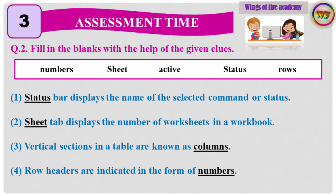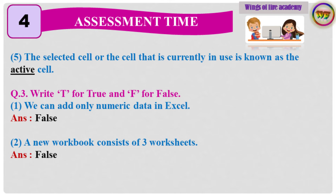Question 2: Fill in the blanks with the help of the given clues. 1. Status bar displays the name of the selected command or status. 2. Sheet tab displays the number of worksheets in a workbook. 3. Vertical sections in a table are known as columns. 4. Row headers are indicated in the form of numbers. 5. The selected cell or the cell that is currently in use is known as the active cell.